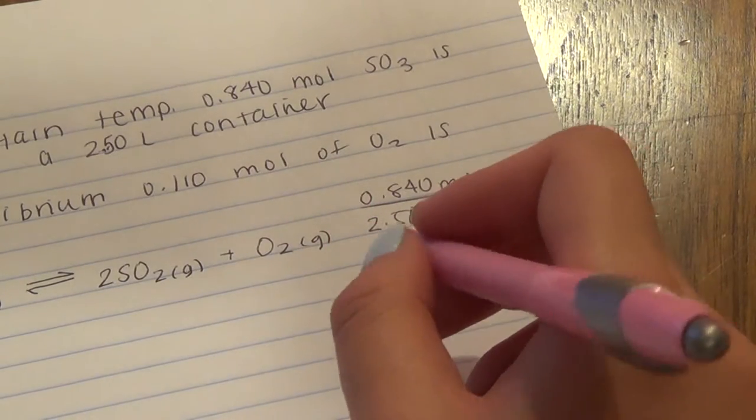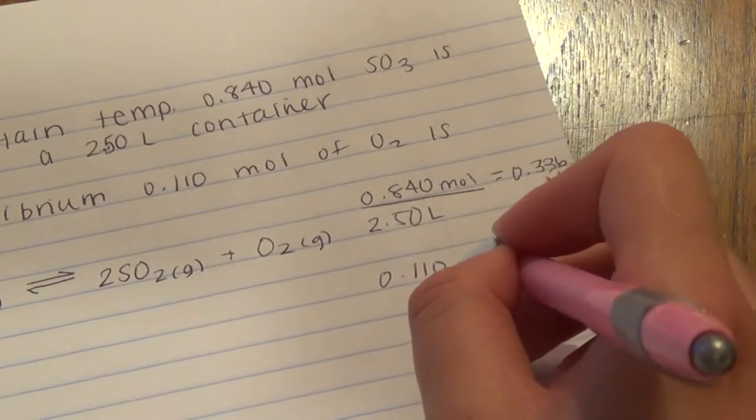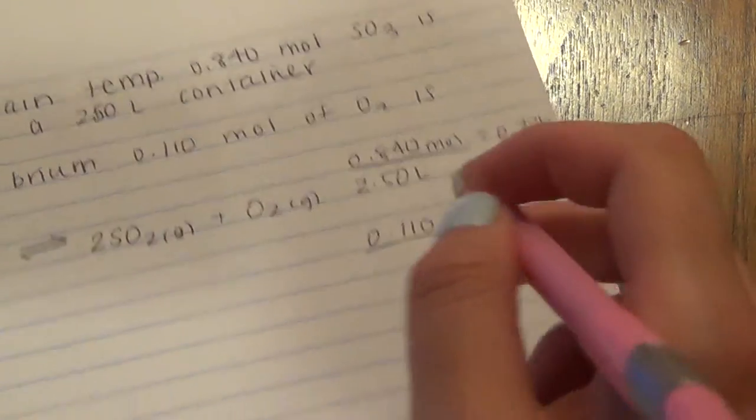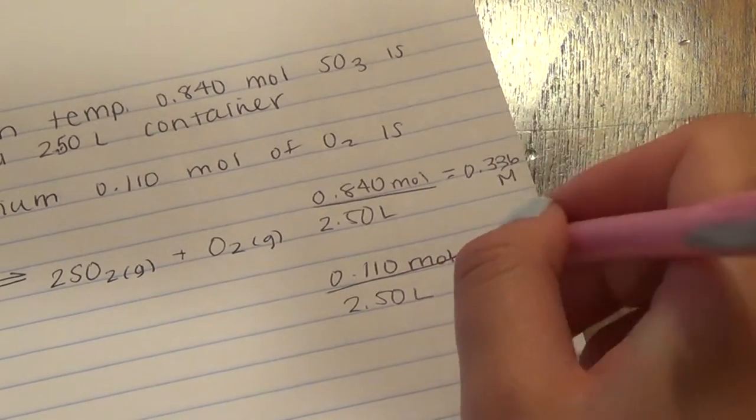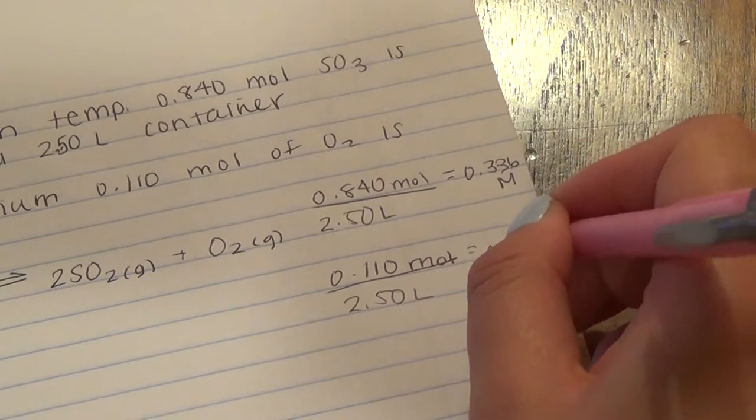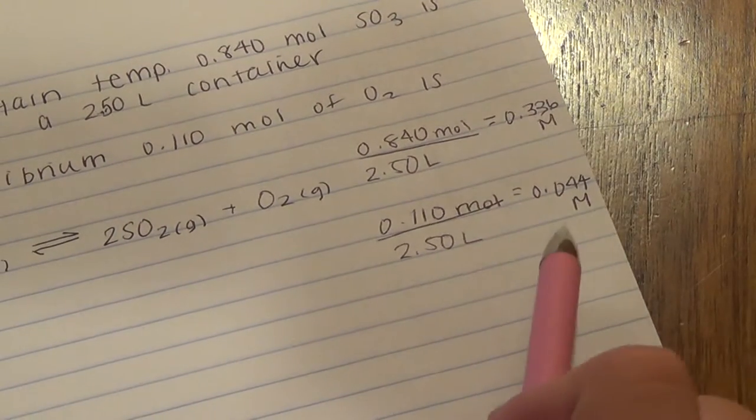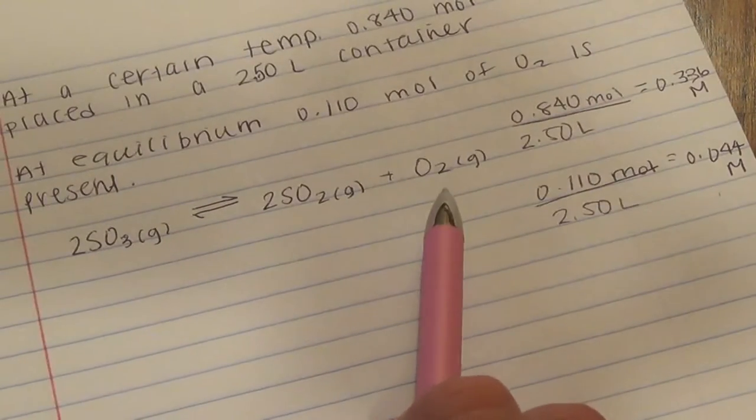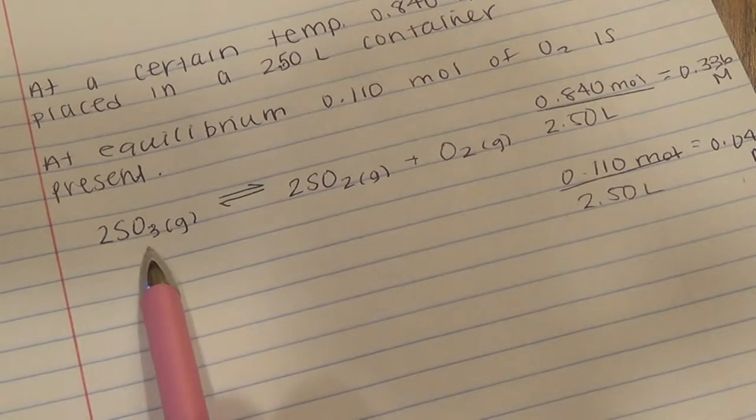We have to convert that to molarity. 0.110 moles divided by 2.50 liters gives us 0.044 molarity. So this is the equilibrium concentration of O2, and this is the initial concentration of SO3.